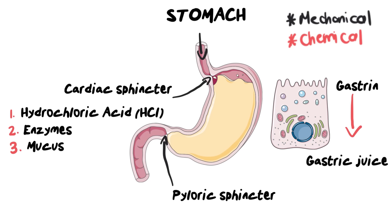Once all of these substances are added together along with the food bolus and they've mixed and churned together, they produce a substance called chyme. That is the liquid substance you can now see inside the stomach, and it's ready to be absorbed in the small intestine.